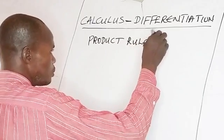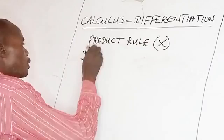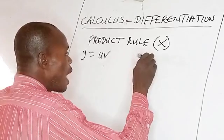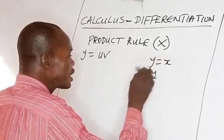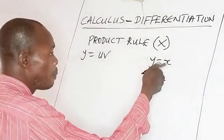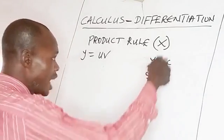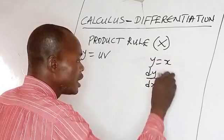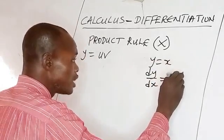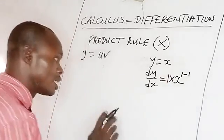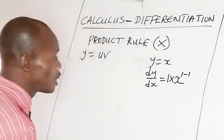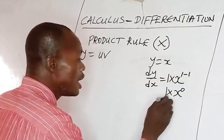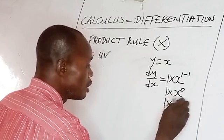Product means multiplication. If y is the product of u and v, remember the general formula we have examined: if y equals x, we take the power — there is an invisible 1 — use that 1 to multiply the function, giving 1 times x raised to power 1 minus 1, which is x to the power 0, and x raised to power 0 is 1, so dy/dx equals 1.